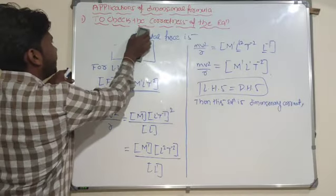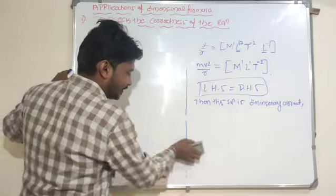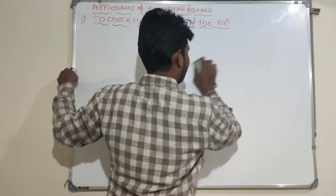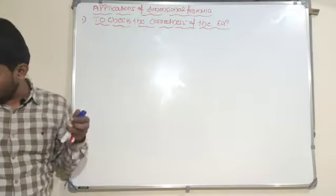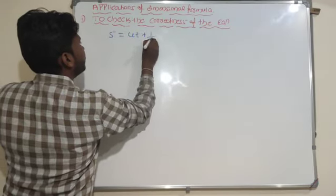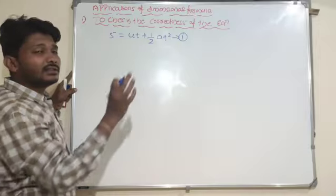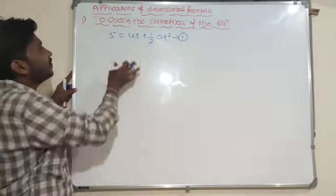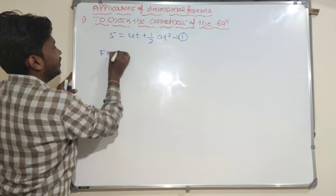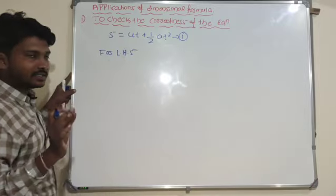Let me give another example: S equals U T plus half of A into T square. In bridge course classes we derived this equation by graphical method. Your duty is to verify whether this equation is dimensionally correct or not. First, write the dimensional formula for LHS — the distance term: M0 L1 T0.